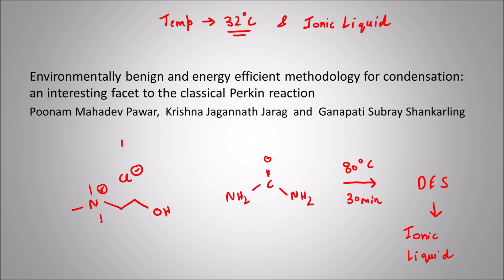They avoided the use of any base for carrying out the same reaction — using an aromatic aldehyde like benzaldehyde and acetic anhydride, but with no added base. The temperature required is very moderate — 32 degrees Celsius, which is essentially room temperature in India. They used ionic liquids, which are very useful because they are biodegradable and not toxic to the environment. To make the ionic liquid, they took choline chloride and urea — both environmentally friendly compounds — and heated them for 30 minutes at 80 degrees Celsius.